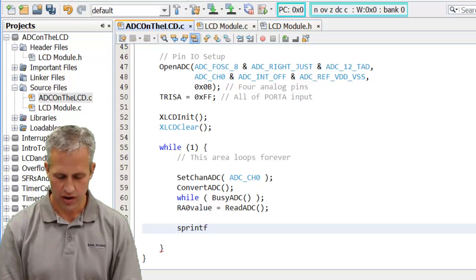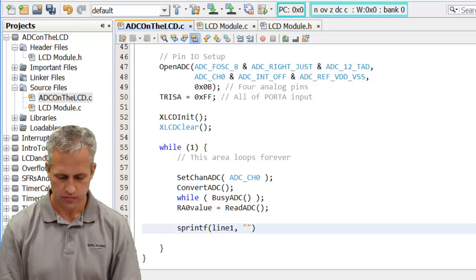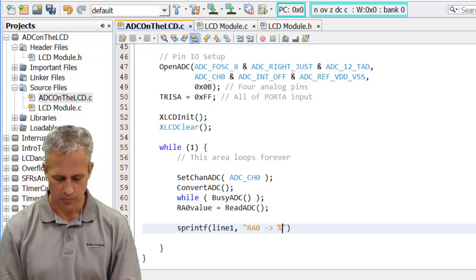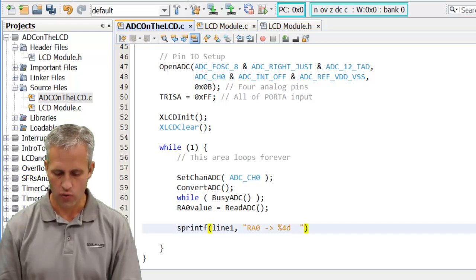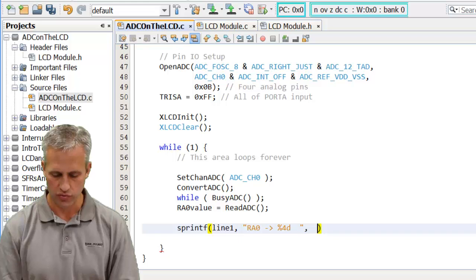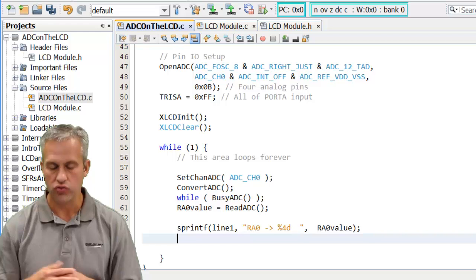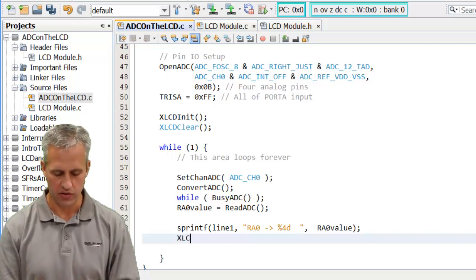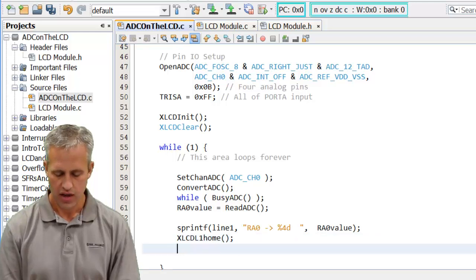We would like to do an sprintf. We'll start off on line one. I don't know, we'll print like RA0 and we'll say %d. I'll put a %4d just to make sure it always prints the same number of characters, so it's going to always use four characters. I'm going to print the RA0 value. I'm going kind of fast but that's because you can pause the video if you like.